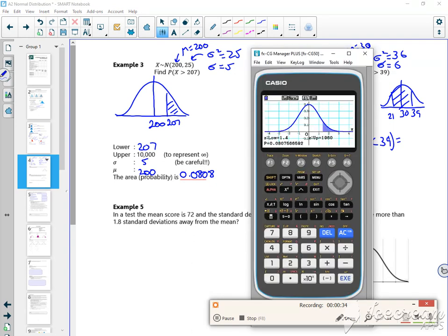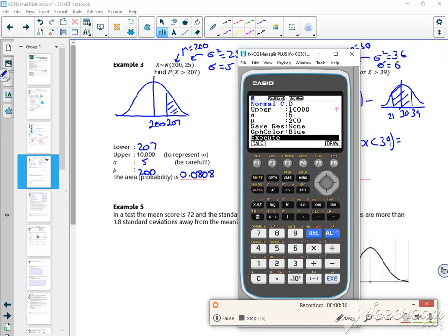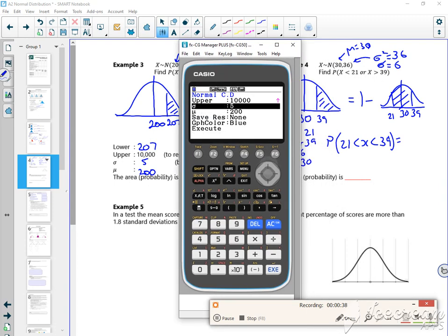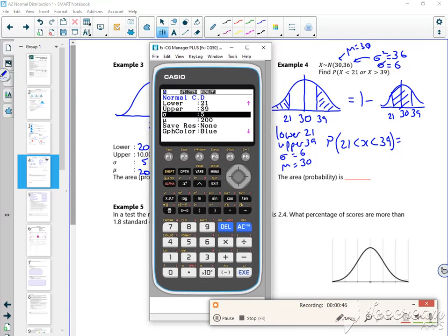21 and 39. So my lower is 21, upper is 39, sigma is 6, mu is 30.